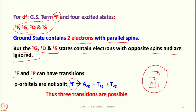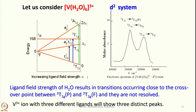D2, D8, D7, D3 show three transitions, whereas D1, D4, D6, D9 show only one transition in the d-d spectrum. Consider hexaaquavanadium(3+) — a D2 system expected to show three transitions, but the spectrum looks like only two transitions. Why? The ligand field strength of water results in transitions occurring close to the crossover point. The ³T1g(P) and ³T1g(F) states are very similar in energy and not resolved; they overlap, producing one broad peak along with a high-energy one.